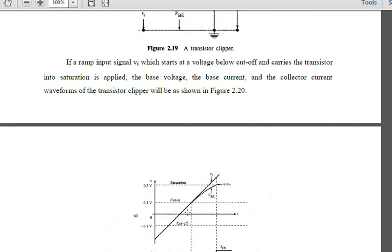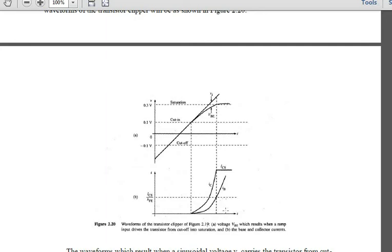The ramp input is applied to the base voltage and the transistor moves from the cutoff region, crosses the boundary, and then reaches the saturation region. This produces waveforms showing the base current and collector current as the ramp drives the transistor from cutoff through active to saturation. This is the waveform behavior when a ramp signal is applied as input to the transistor clipper.